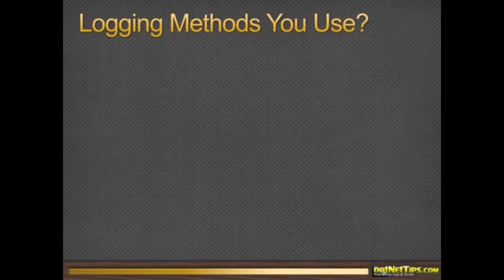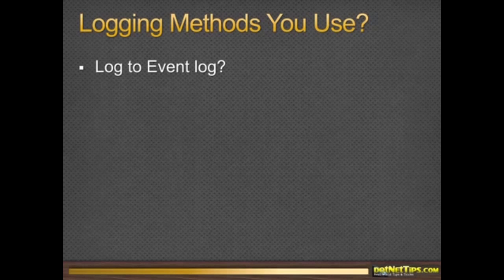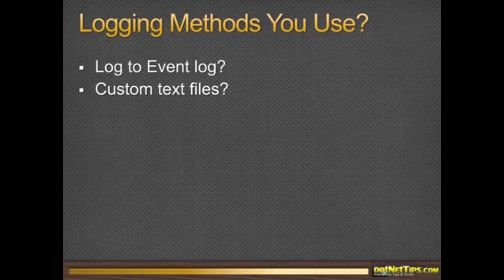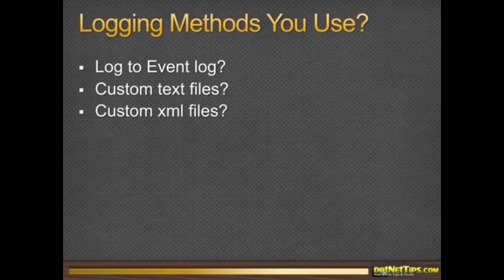What logging mechanisms do you use now? Enterprise Library is common. You can log to a database. Log to the event log — you should always do this because system administrators like reading it. If only as a backup of whatever mechanism you use, you should be logging to the event log. It's free, it's easy, and they go in there really fast. Custom text files — I'm not a big proponent of that. I really like XML because text files are hard to bring into another program. Custom XML files are the best because they're really transportable. You can use LINQ and XDoc to suck it into other programs or databases.